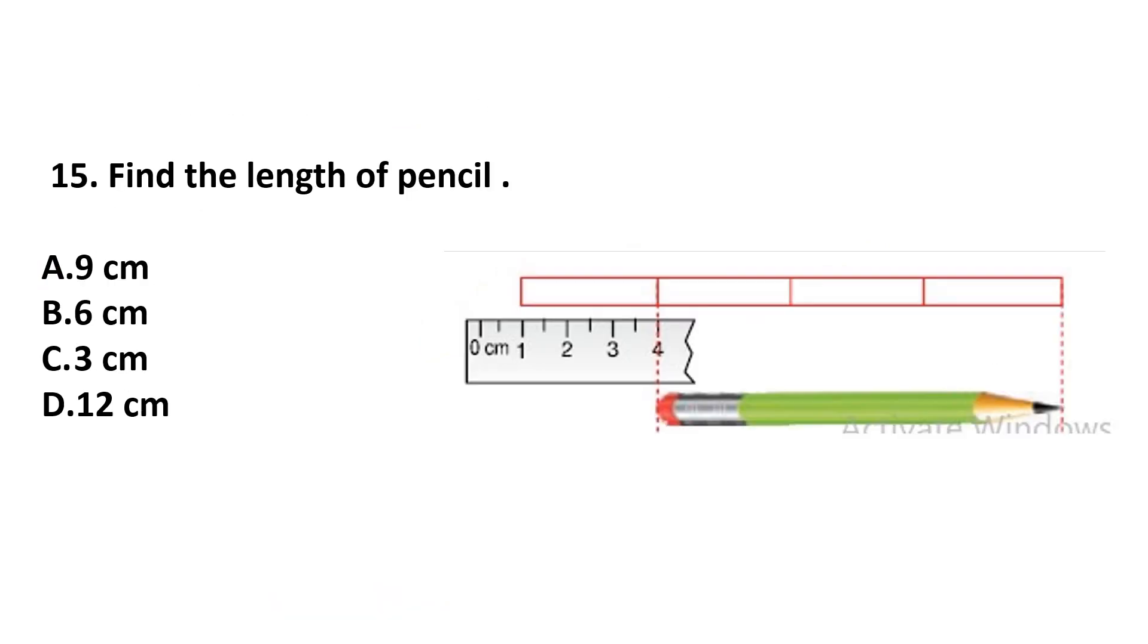Question number 15. Find the length of pencil. This pencil and scale is given. And we can see that 1 box is equal 1, 2, 3 cm long. If 1 box is equal 3 cm long and pencil is 1, 2, 3 box long, each box is of 3 cm long. 3 boxes equal 9 cm long. Answer is option A.